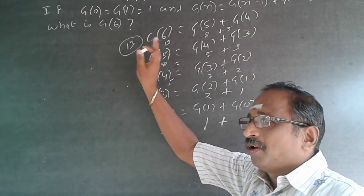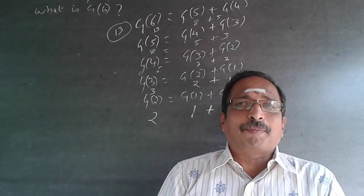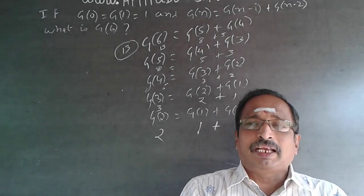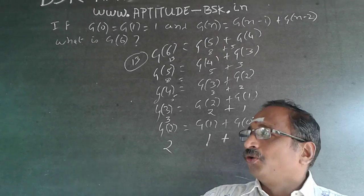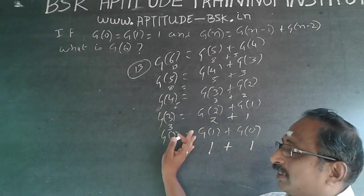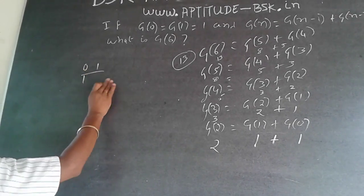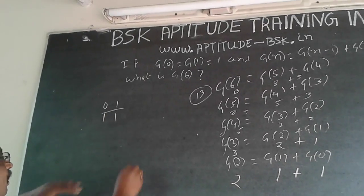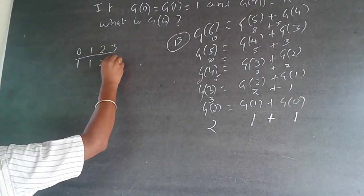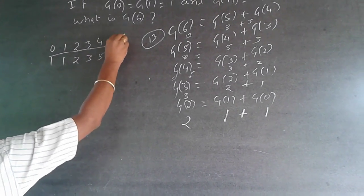But the easiest way of doing it — whenever you write any programming language, one of the early programs is writing the sum of previous numbers, which is nothing but the Fibonacci series. You've done a program for Fibonacci series, so you don't have to go through all those steps. The easy way is: g of 0 is 1, g of 1 is 1, then g of 2 is 2, g of 3 is 3, g of 4 is 5, g of 5 is 8, and g of 6 is 13.